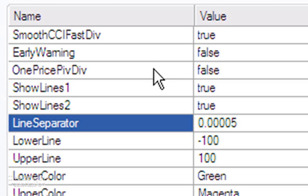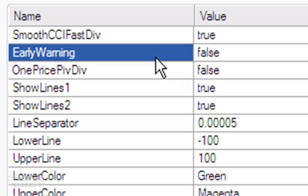A couple of other things just to mention: OnePricePivDiv, what this does is if it finds two CCI pivots but it's only found the first price pivot, we're still waiting for the second price pivot to maybe occur. Then what this will do is, instead of waiting for that second, or rather the first, the most recent price pivot, it will just show you, it will just use the price at which the second CCI pivot occurred in the calculation.